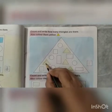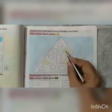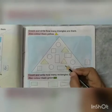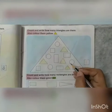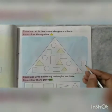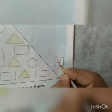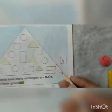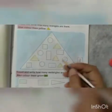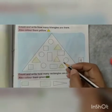1, 2, 3, 4. There are 4 triangles. Now we will write 4 here.